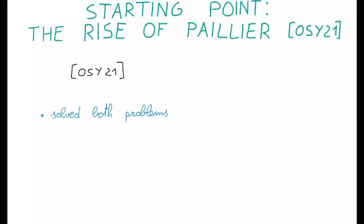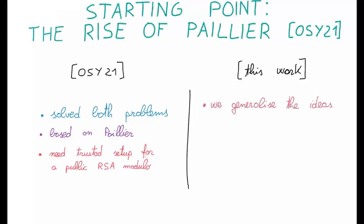Our starting point is the rise of Paillier. It is a Eurocrypt 2021 paper that solves both the problems I just described. The solution is based on the Paillier cryptosystem, but all the constructions suffer from a problem. Namely, that they need a trusted setup that generates a public RSA modulus.